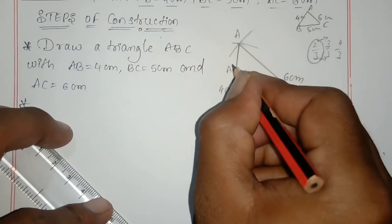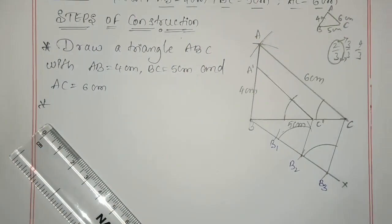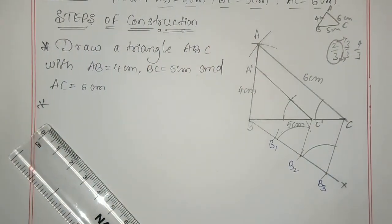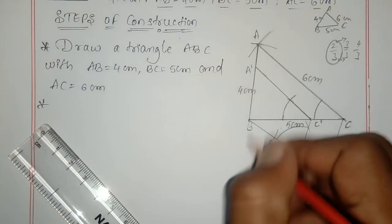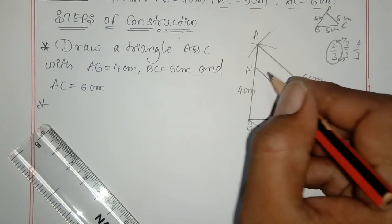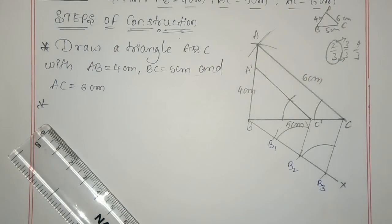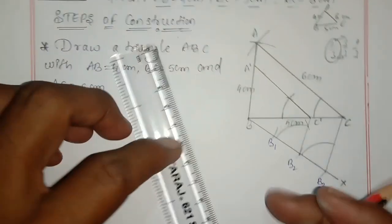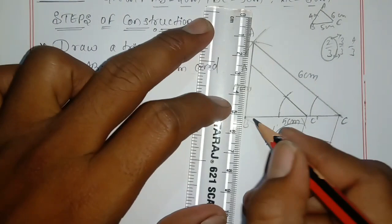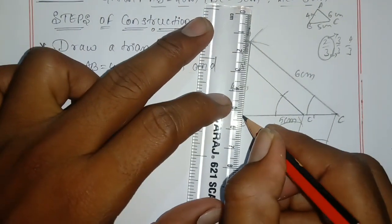This line intersects AB at A'. So A'B C' is the required triangle.